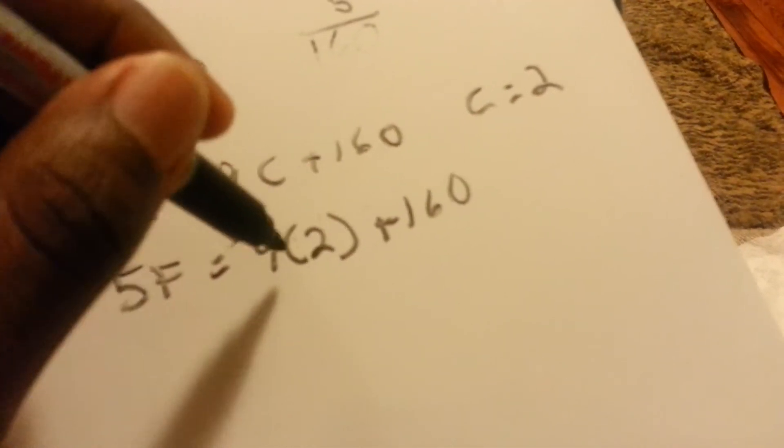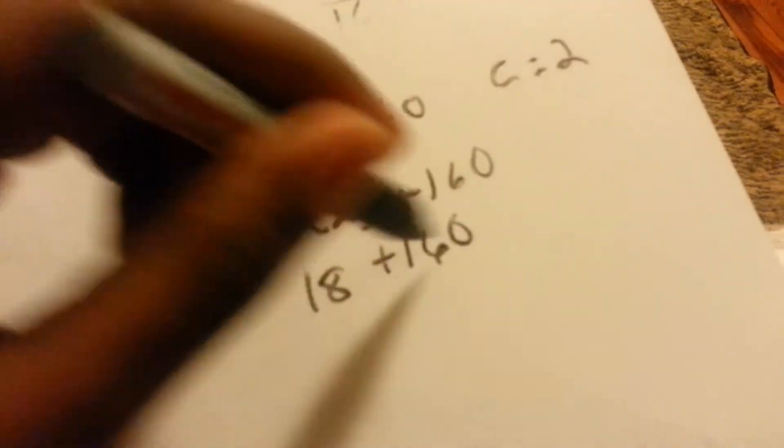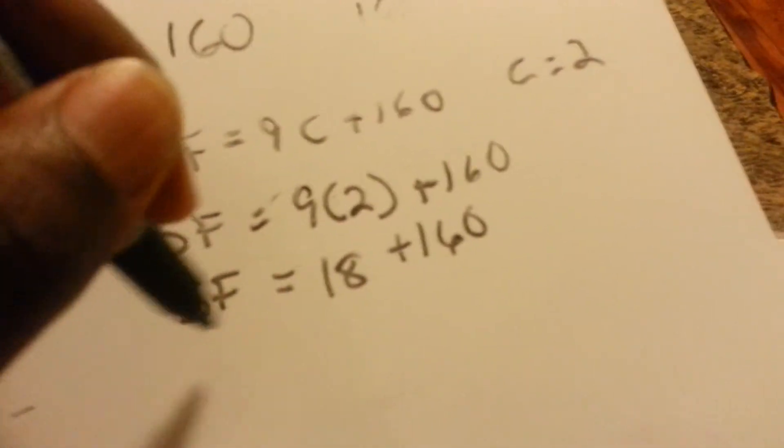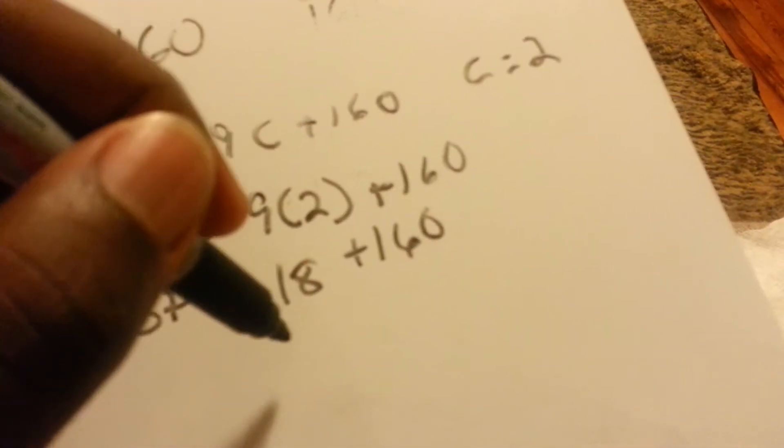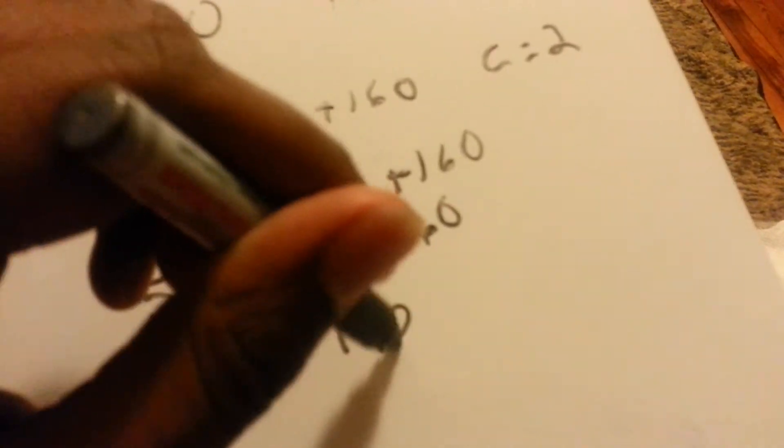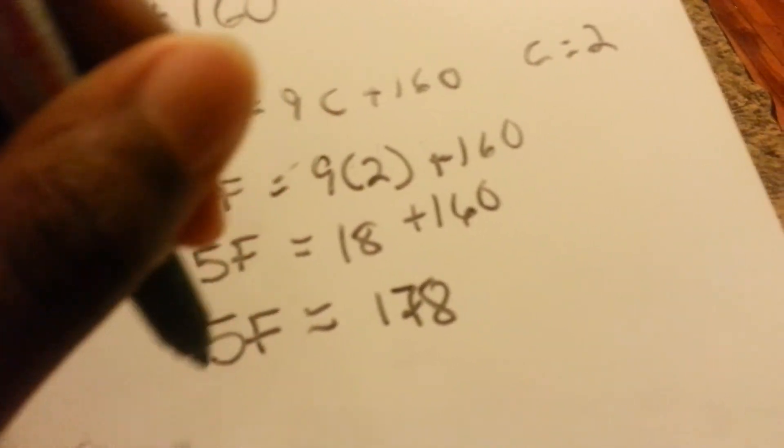And you have 9 times 2 is 18 plus 160 equals 5F. And I got to add these together. And that's 178 equals 5F.